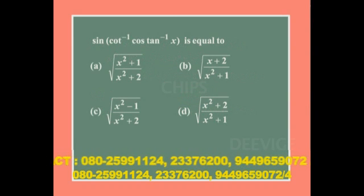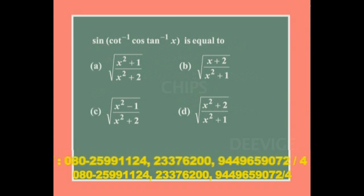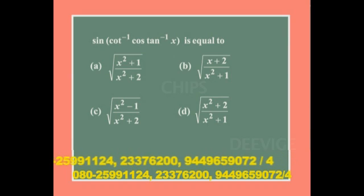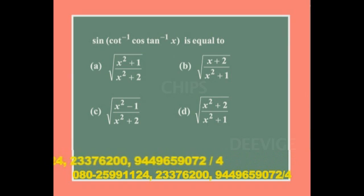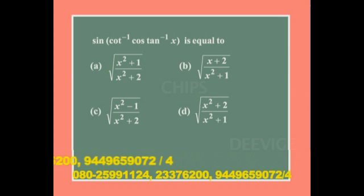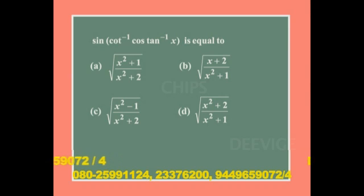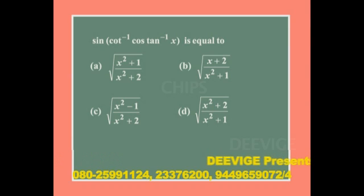Next problem: sin(cot⁻¹(cos(tan⁻¹x))) equals which option? Option a: √((x²+1)/(x²+2)), option b: √((x+1)/(x²+1)), option c: √((x²−1)/(x²+2)), option d: √((x²+2)/(x²+1)).